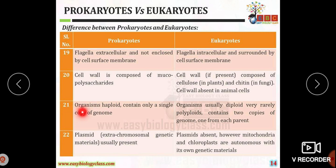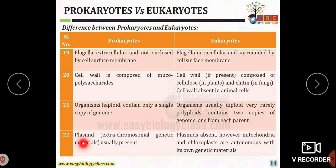Prokaryotic organisms are haploid, containing only a single copy of the genome. Eukaryotic organisms are usually diploid and some are polyploid. The plasmid, which is extra-chromosomal genetic material, is present in prokaryotic organisms, but in eukaryotes autonomous genetic material like mitochondria and chloroplasts serve a similar role.